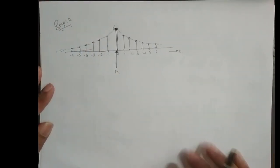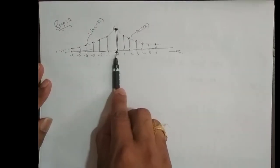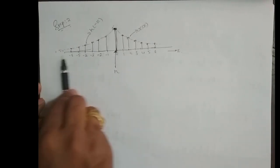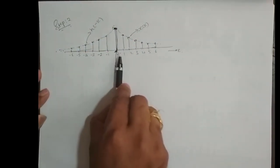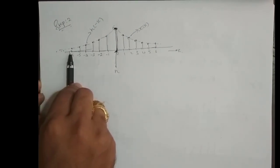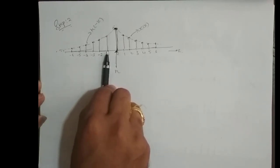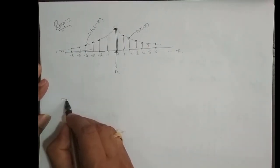This is x[k] and this is h[−k]. The next step is to take this slider and move h[−k] left or right along the k-axis — as I move the slider, the h[−k] sequence moves accordingly. I need to start at minus infinity and keep moving right until the two sequences begin to overlap. Until overlap occurs, that is the non-overlapping region; once overlap begins, that is the overlapping region.